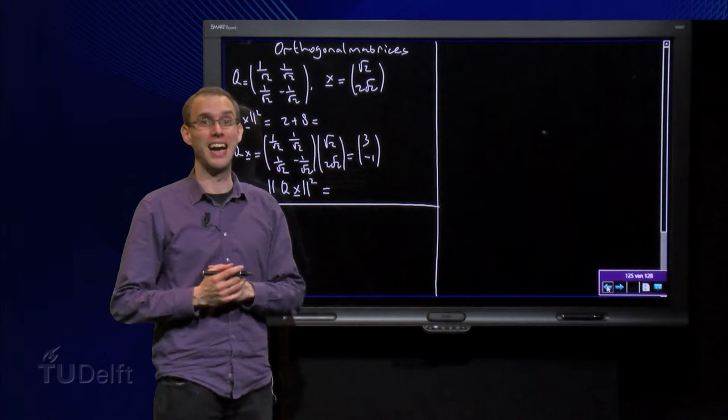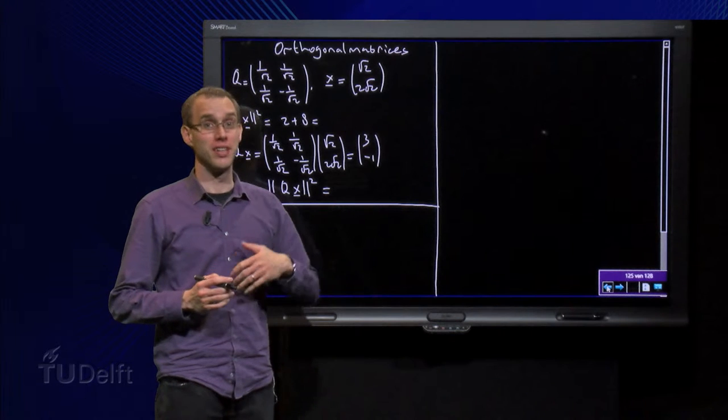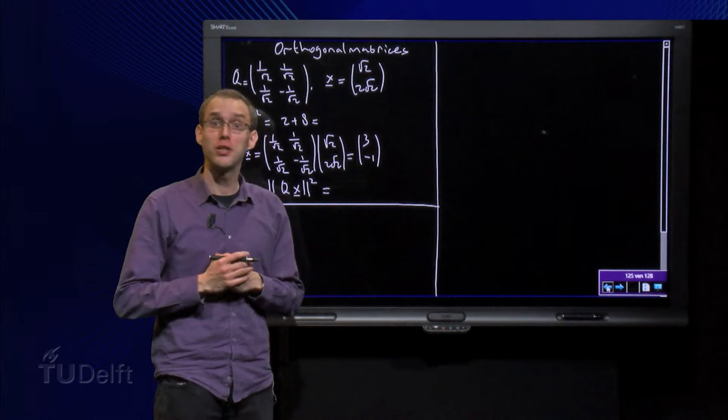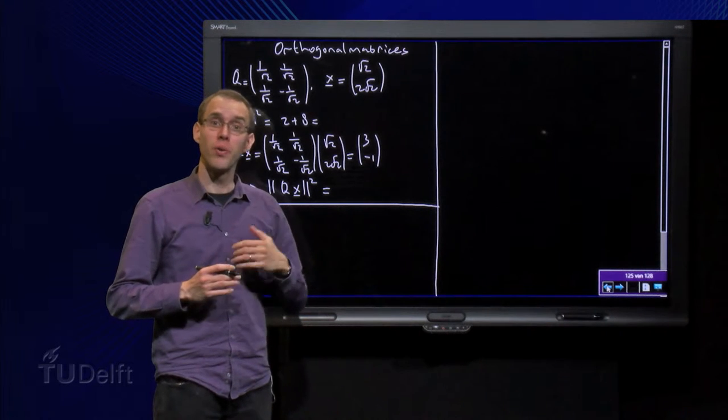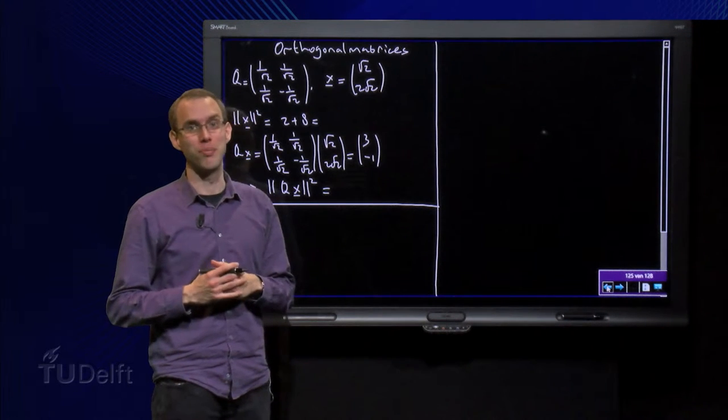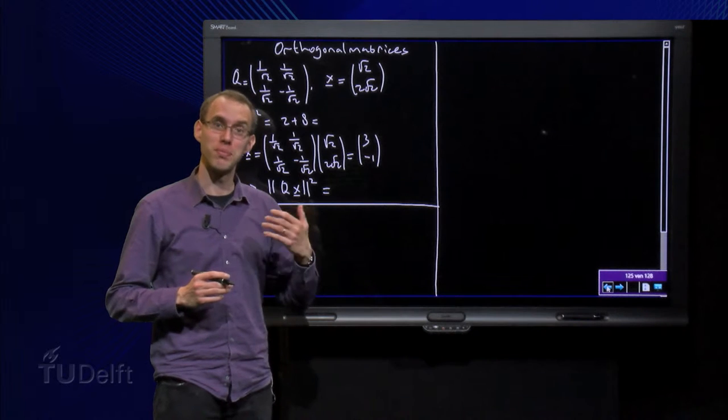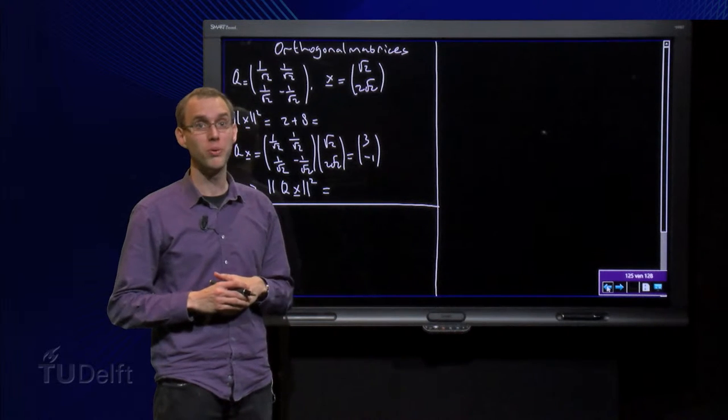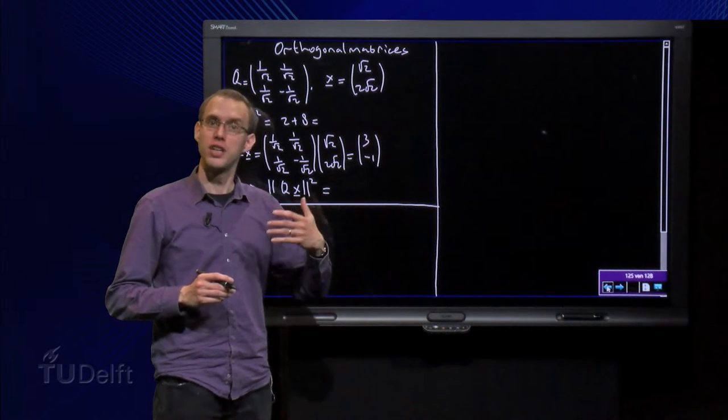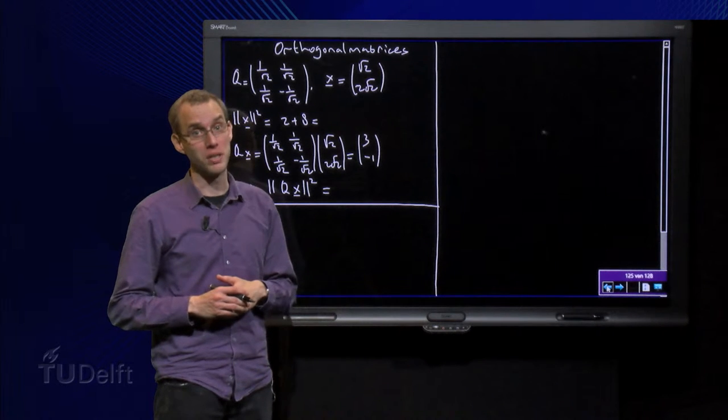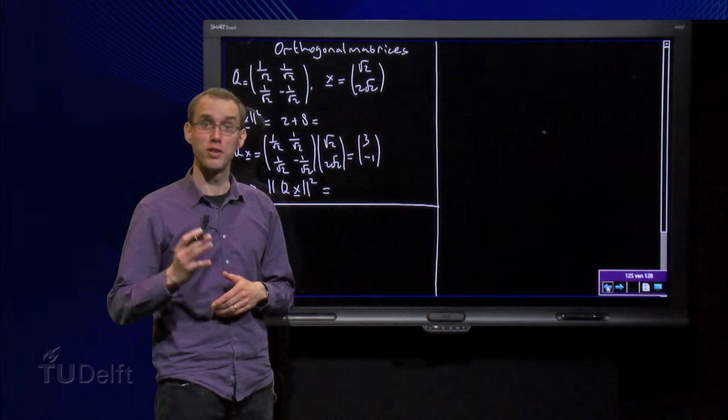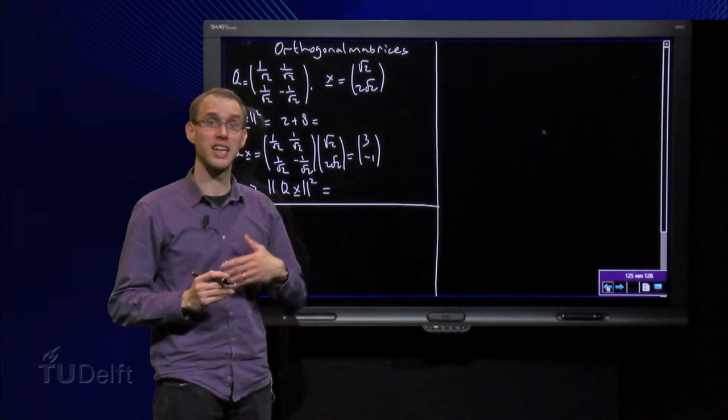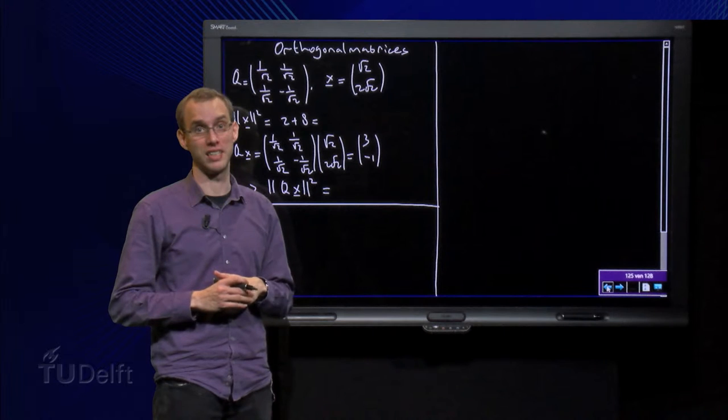Orthogonal matrices are nice - their inverse is just a transpose. And it becomes even better when we consider the linear transformation T, implemented by an orthogonal matrix Q. It is T of x equals Q times x. Then we will see that the transformation T preserves both angles between vectors and the lengths of vectors. That means that figures are not distorted by this type of transformation.